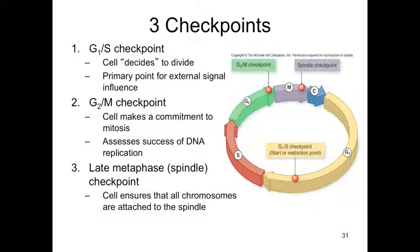There are three checkpoints that have been identified. The G1/S checkpoint is where the cell decides to divide. It's the primary point for any external signal influence, like growth factors, which we'll talk about shortly.